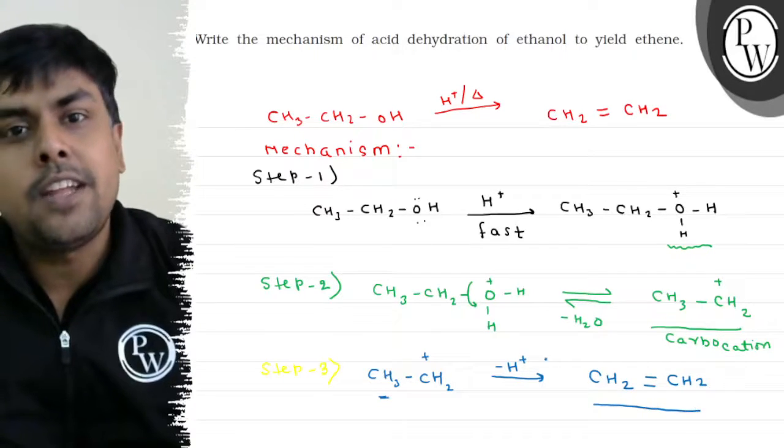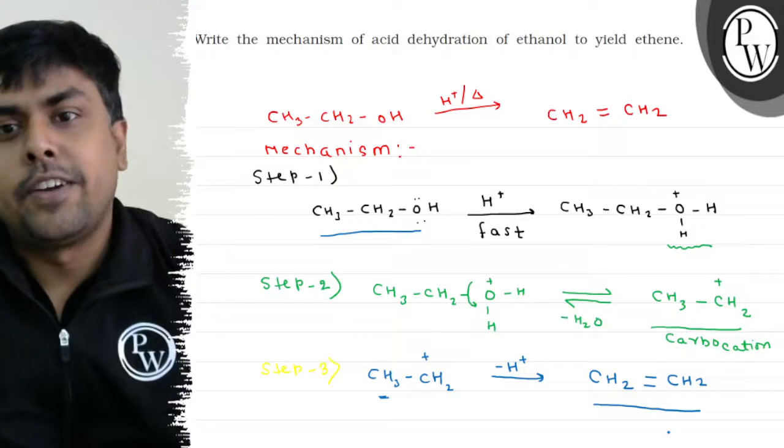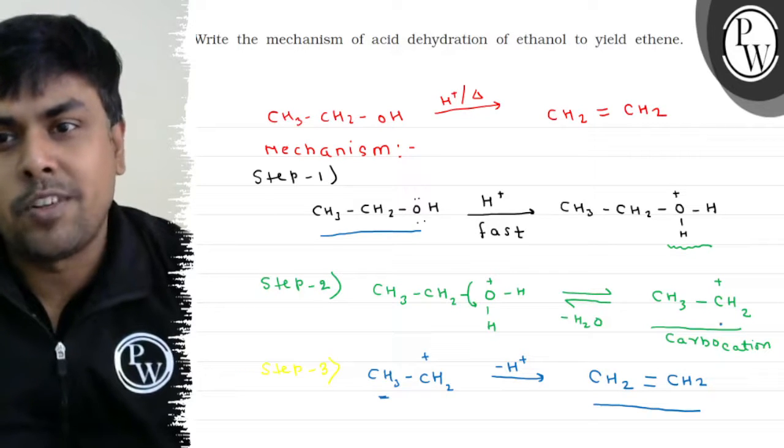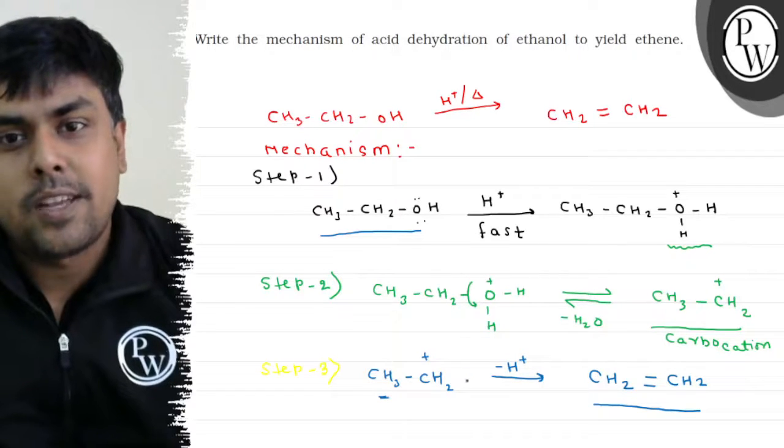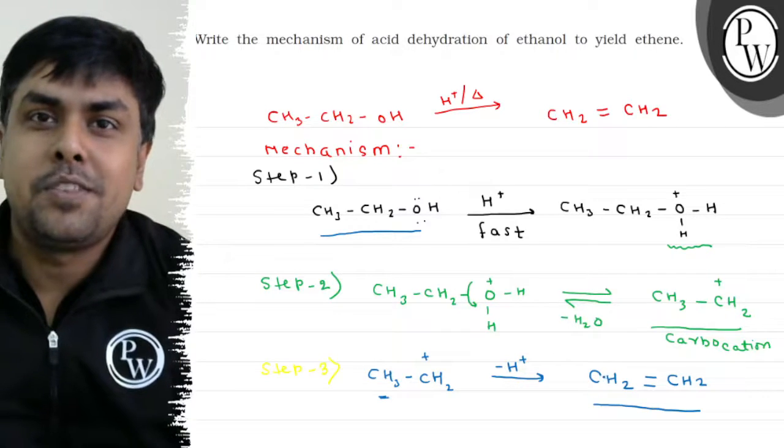So, this is how ethene is prepared from ethanol in three different steps. Step 1, protonation. Step 2, formation of carbocation. And step 3, elimination. Right? I hope you understood the question.